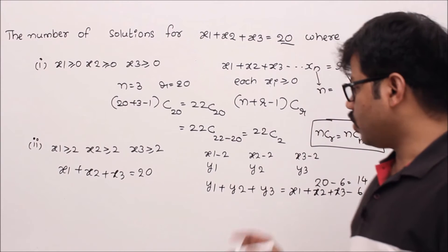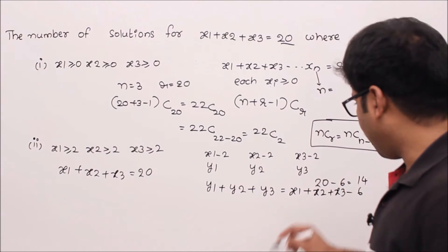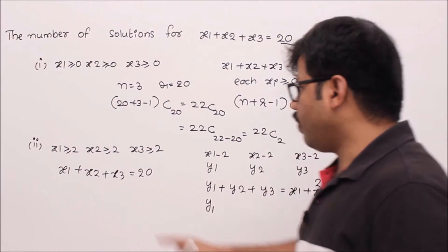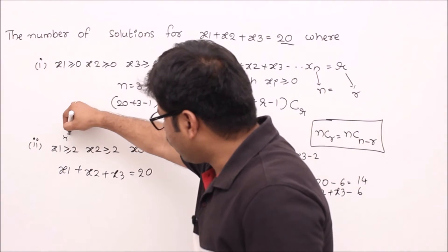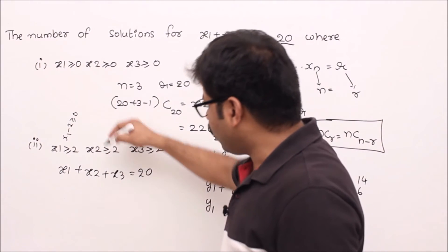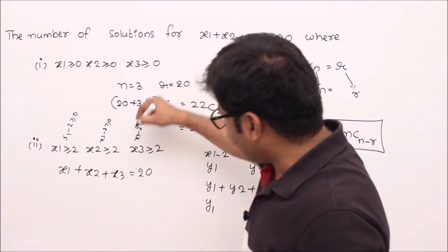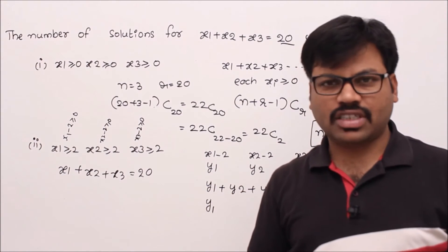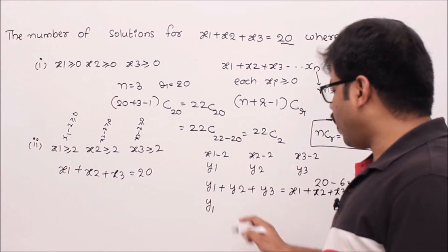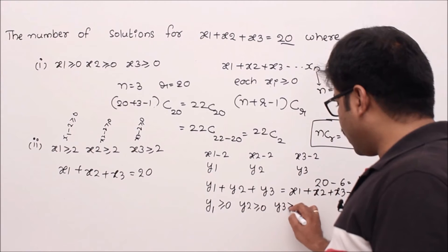So I have created a new equation: y1 plus y2 plus y3 equal to 14. The conditions on y are: since x1 is always greater than or equal to 2, x1 minus 2 is always greater than or equal to 0, so y1 is greater than or equal to 0. Similarly, x2 minus 2 gives y2 greater than or equal to 0, and x3 minus 2 gives y3 greater than or equal to 0.